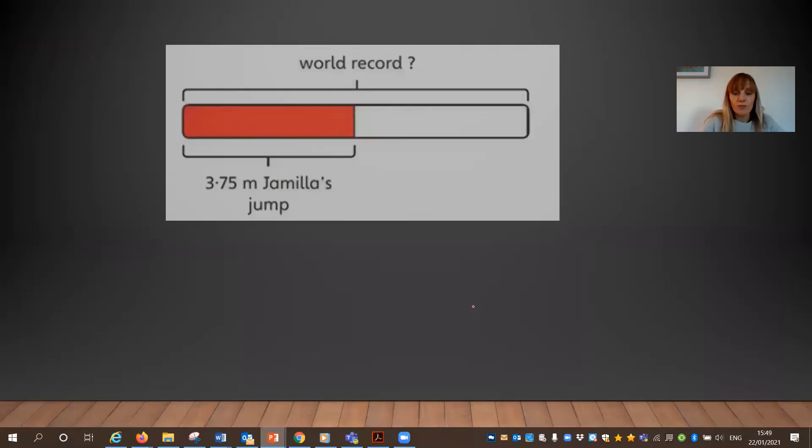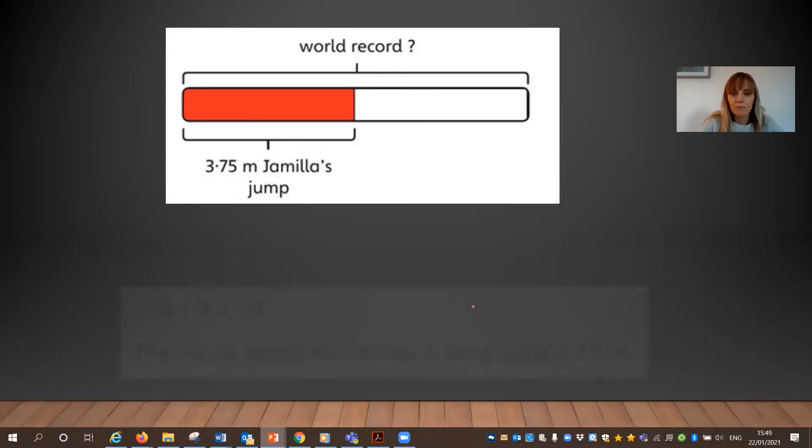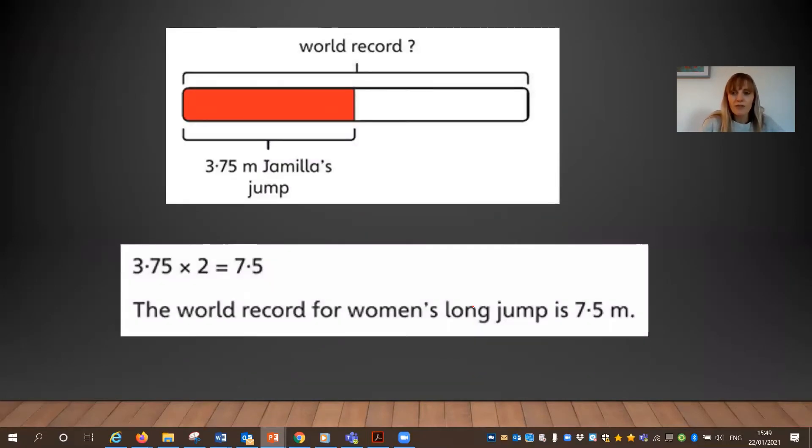Well, here we go. So there's our bar model. Now, if you've got this correct, what you have to do next is actually double the 3.75 metres. Because the 3.75 that Jamila has jumped is half as far as the world record. So the opposite of that is to actually double the 3.75 to give us a final answer of 7.5 metres. So the world record is actually 7.5 metres.